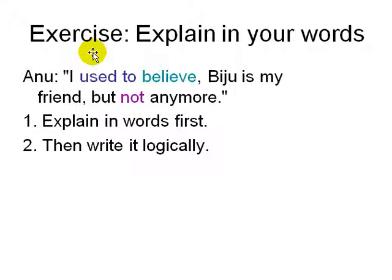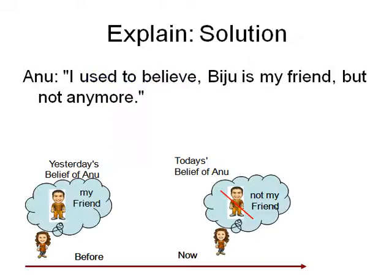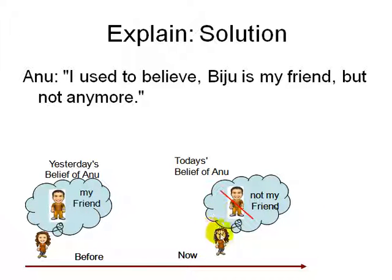Let's look at the example of changing beliefs. Anu: 'I used to believe Biju is my friend, but not anymore.' This involves multiple time points. In the past, it was a belief that Biju was a friend, but now she doesn't believe that. Anu's belief is that Biju is not a friend. We don't really know if she is a friend or not, but this is about her belief changing — multiple belief points.